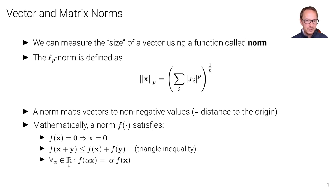And finally, for each scalar alpha, the norm of the vector multiplied with alpha must be equal to alpha absolute times the norm of the vector itself.